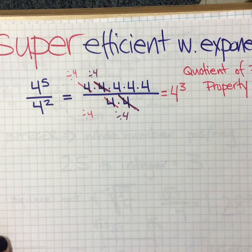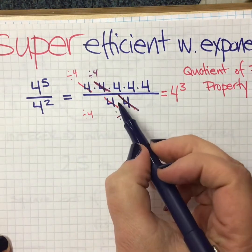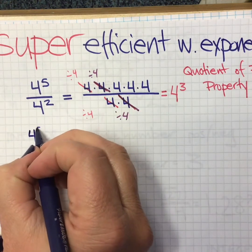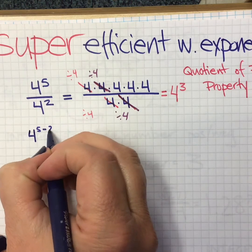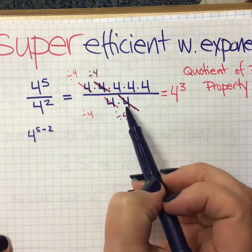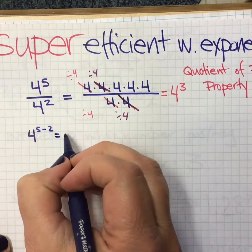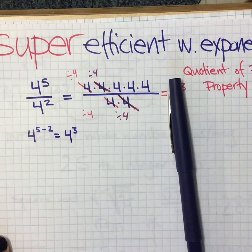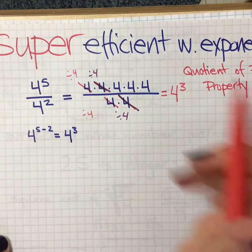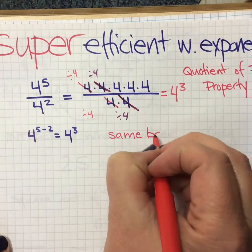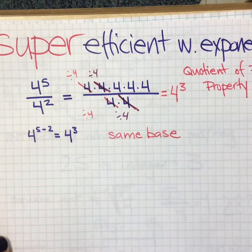Which of course you guys have now learned these tricks that we've got. What did we do? What we actually said was 4 to the 5th minus 2, wasn't it? We said 4 to the 5th, take away the 2 at the bottom, gave me 4 to the 3rd. What's really important here is remember it must have the same base.